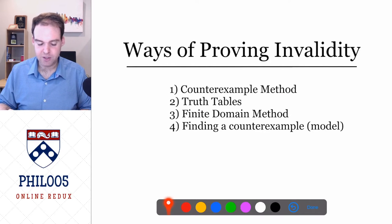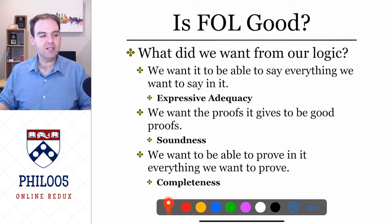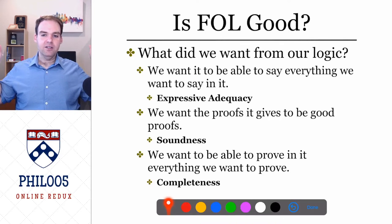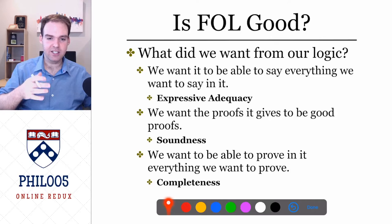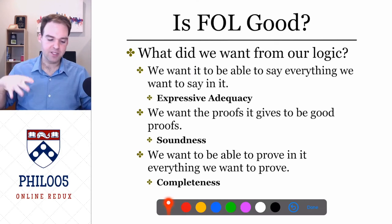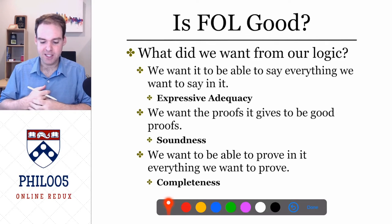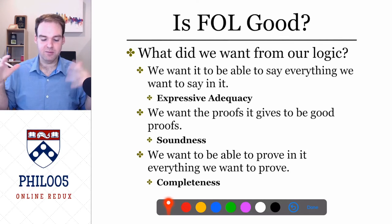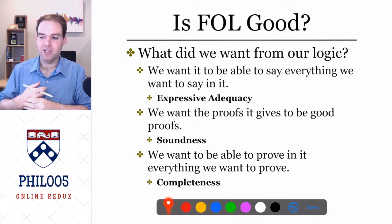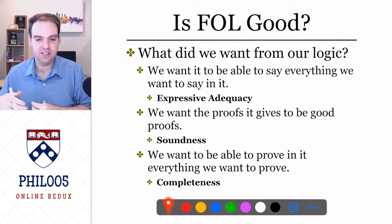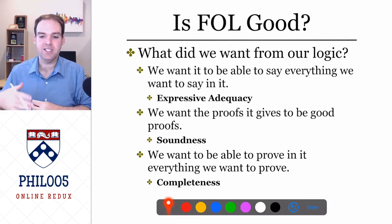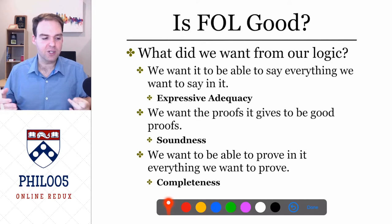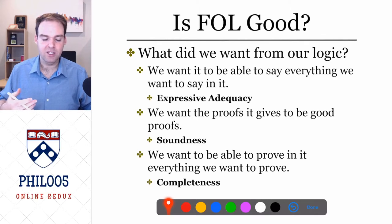To recap the ways of proving invalidity: we have four — the counterexample method, truth tables for truth functional arguments, the finite domain method for first order logic arguments, and finding a counterexample more generally, which is what we just did. Finding a counterexample works for any argument at all. First order logic just allows more expressive power — we can talk about arguments that say things like 'everything is this,' 'there exists something like this,' or 'this is identical to this.'